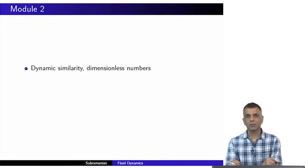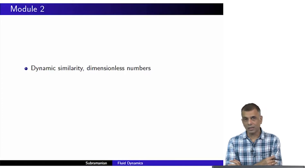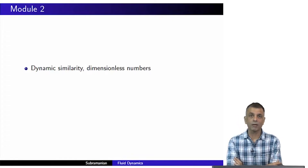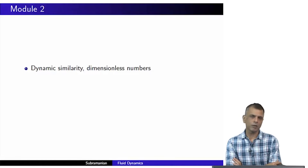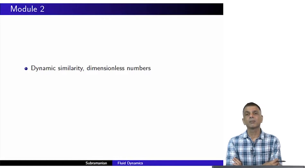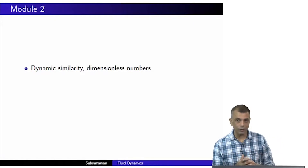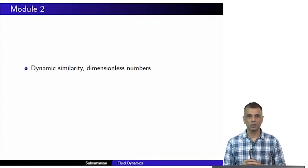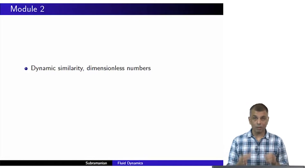We will do the Reynolds number and try to understand what dynamic similarity is all about. Having discussed dynamic similarity, we will also revisit the problem of lift on an aircraft wing that we discussed briefly some time ago — a very interesting application of the dynamic similarity idea. Specifically, we will outline a simple treatment of what is called the Kutta-Joukowsky theorem. So, without further ado, let us launch right into it.